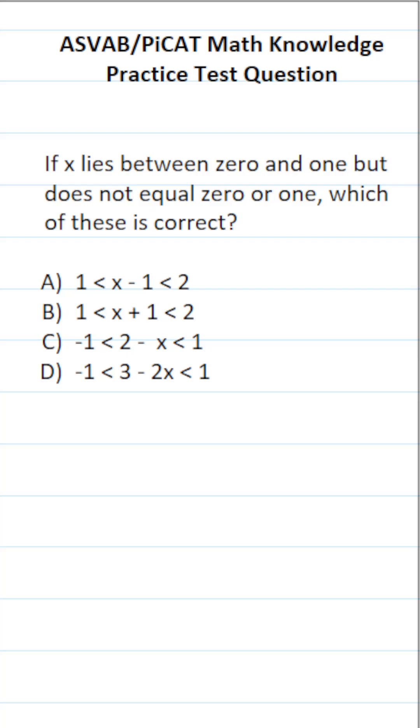Before we look at our answer choices, I'm actually going to write the solution myself. The problem tells us x is between 0 and 1, but it does not equal 0 or 1. So this is what our solution is going to look like. In other words, we're going to solve all these inequalities for our answer choices and find which one matches the solution we just wrote.